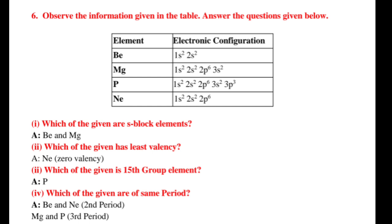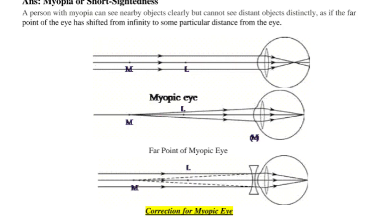Now, section 3. Question 7. Draw the diagrams showing myopia and its correction. Answer: Myopia or short-sightedness. A person with myopia can see nearby objects clearly but cannot see distant objects distinctly, as if the far point of the eye has shifted from infinity to some particular distance from the eye.